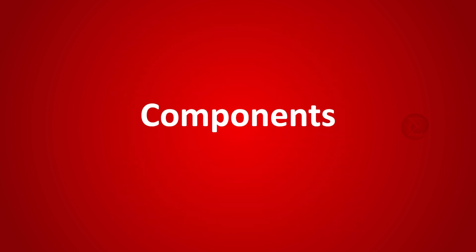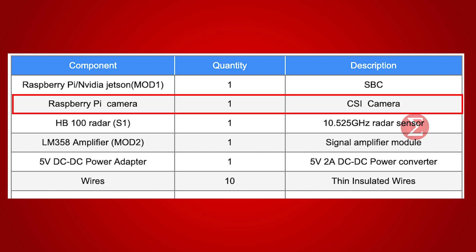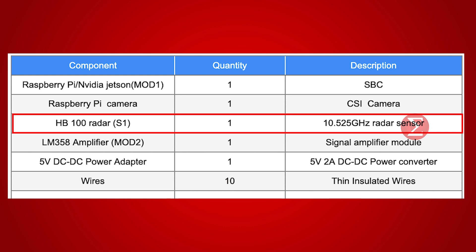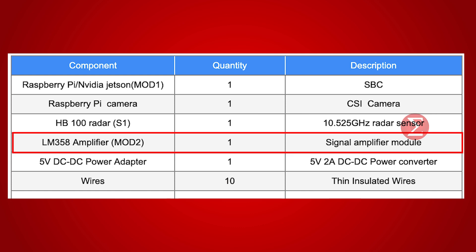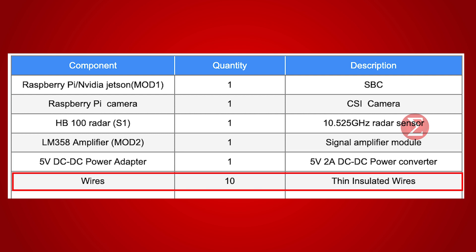The components used to develop this project are a Raspberry Pi or Nvidia Jetson board, over which the complete ADAS system will run; a Raspberry Pi camera to capture the road and help create a map; an HB100 radar to detect lanes and mark safe distance; an LM358 amplifier for signal amplification; and a 5V power adapter to power up the circuit along with some wires.